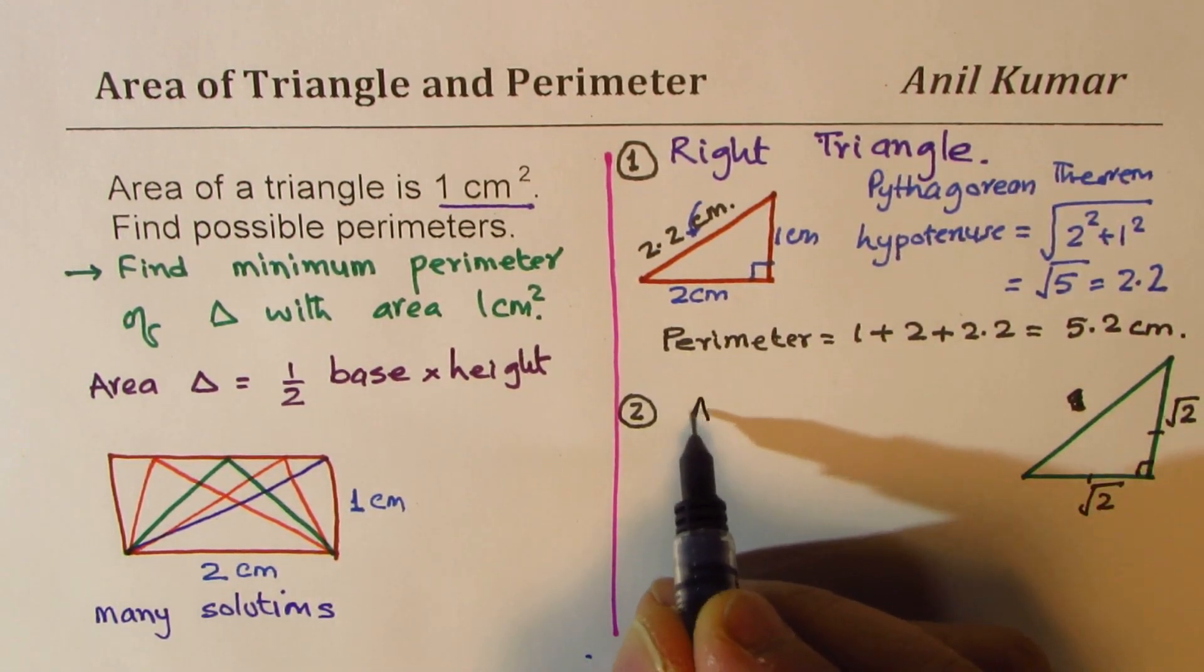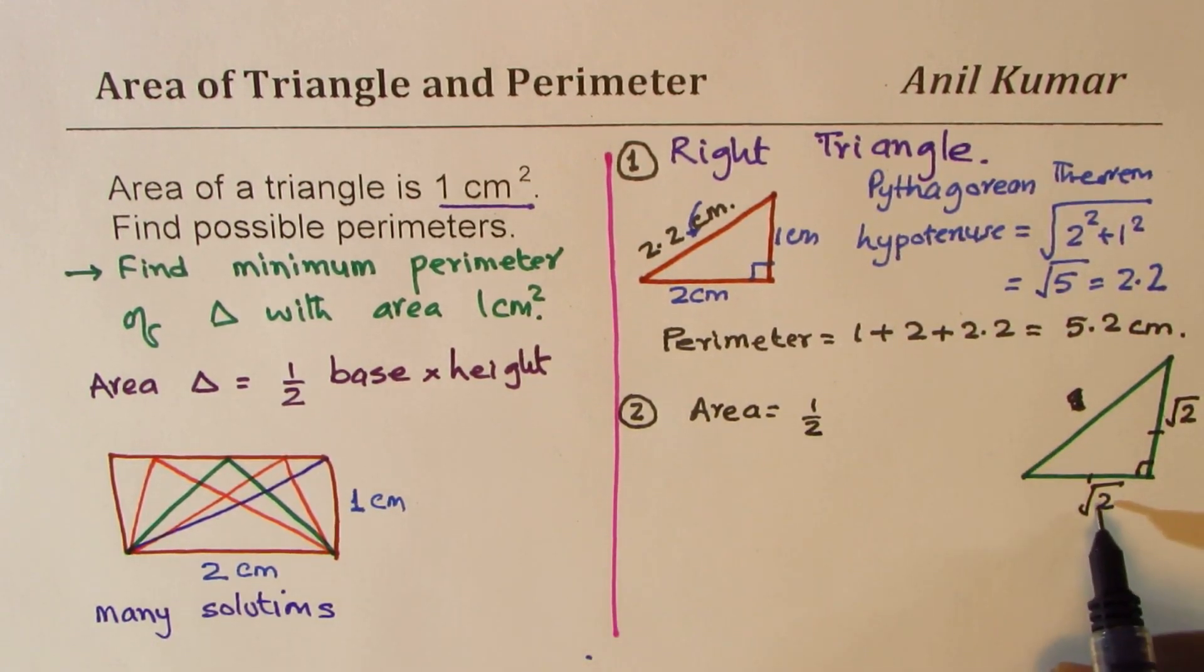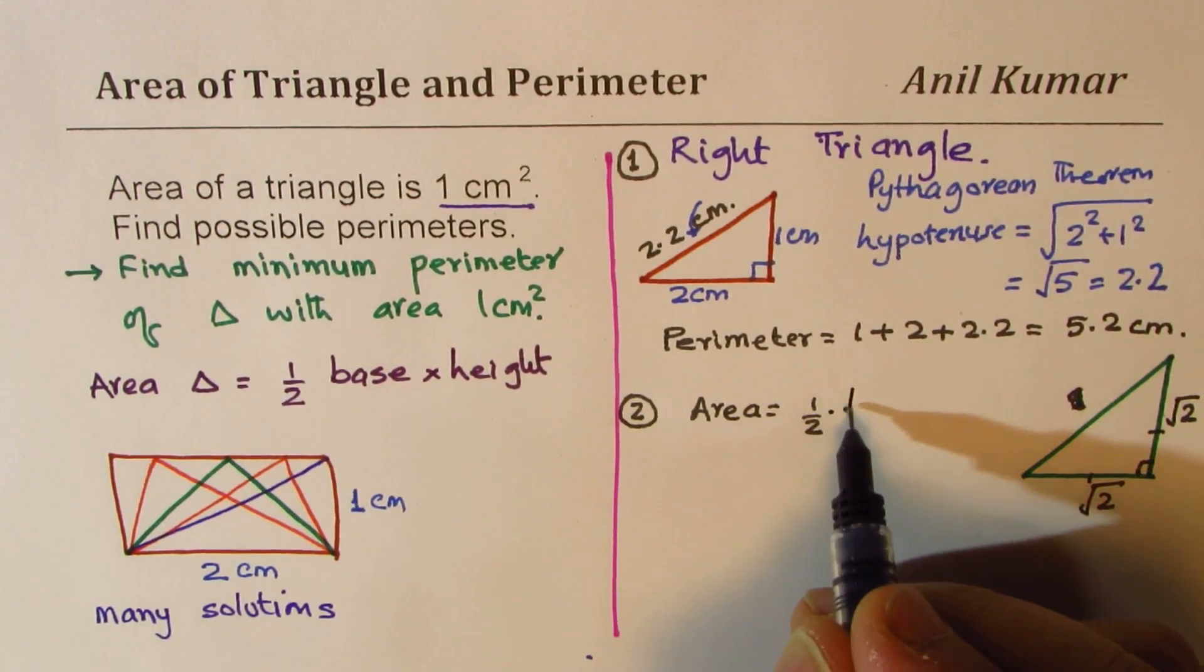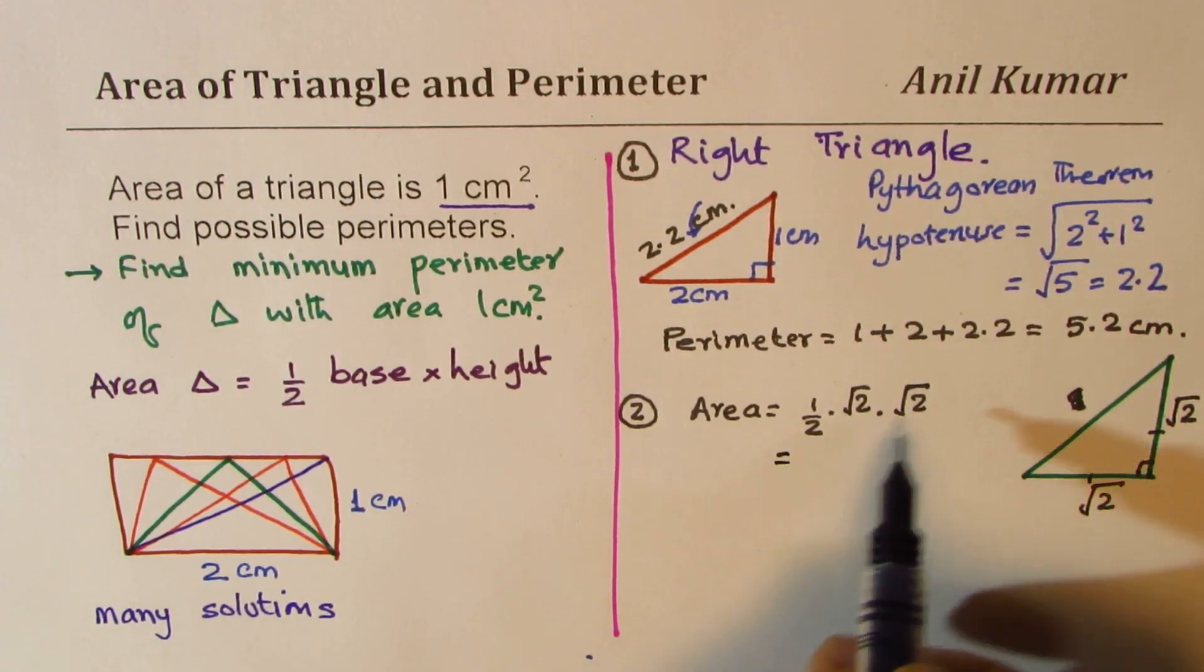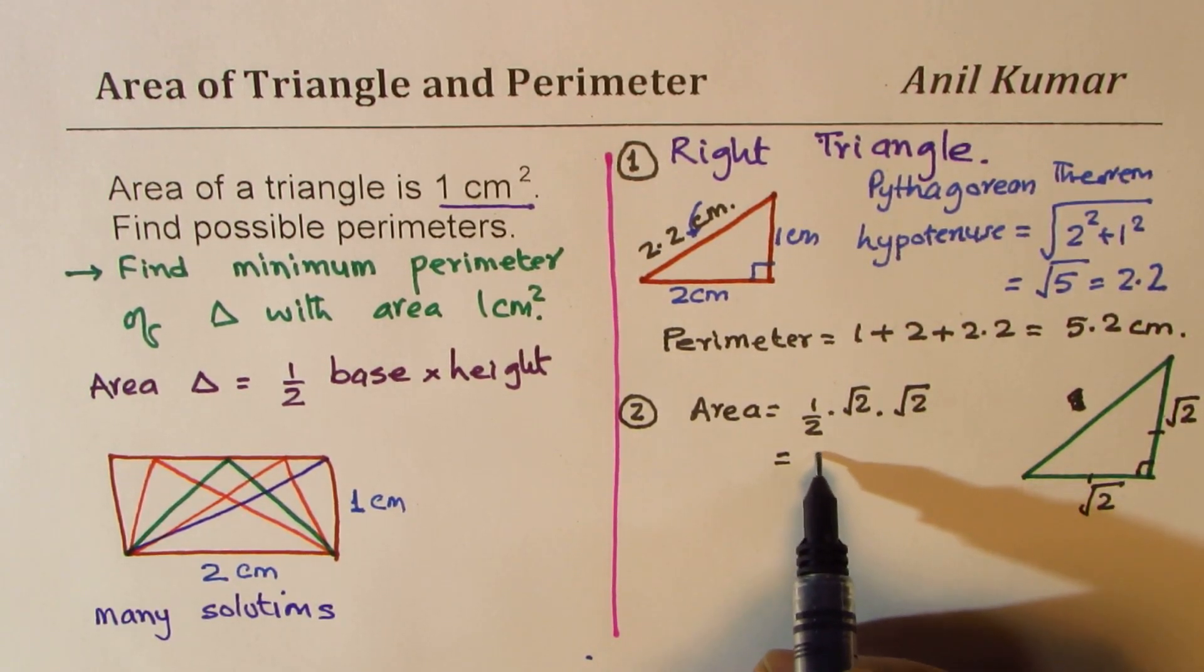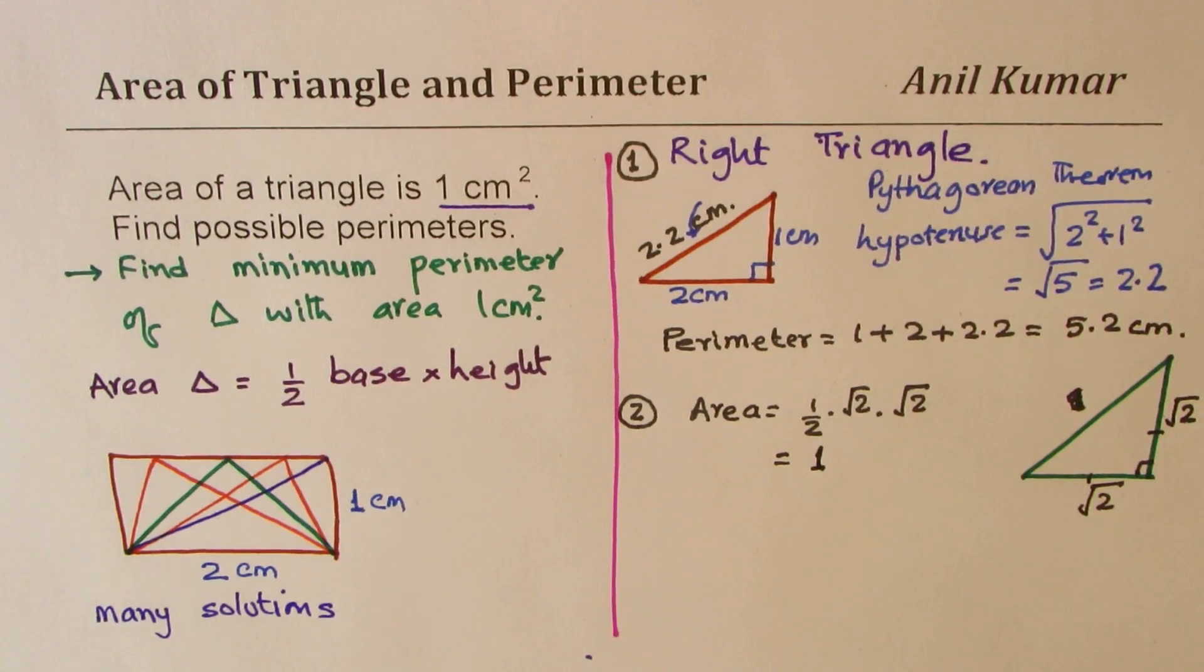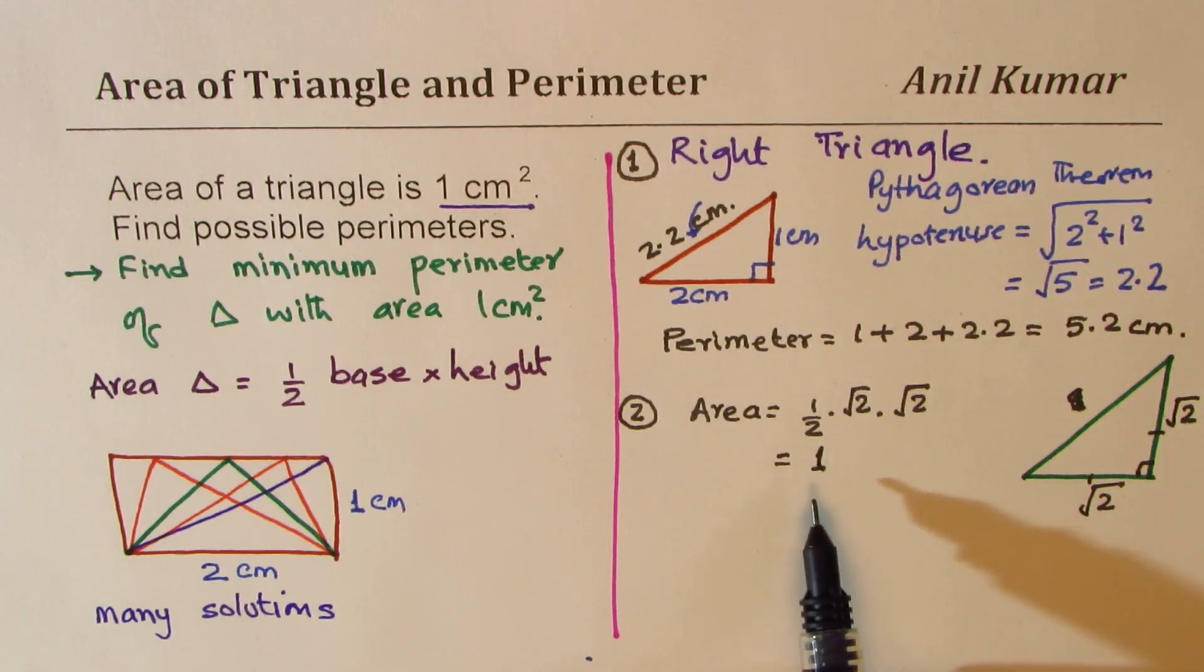Then area is half. So in this triangle, what is the area? Area is half of square root two times square root two. Now square root two times square root two is two. So we get this as one.